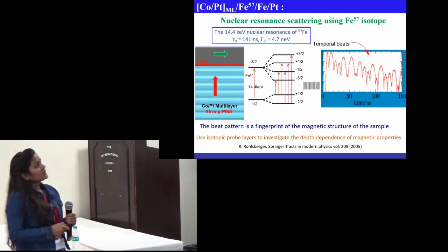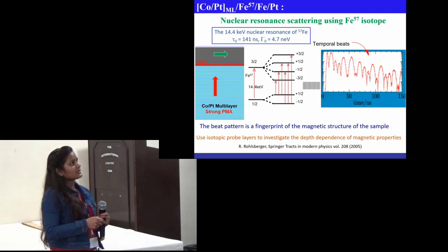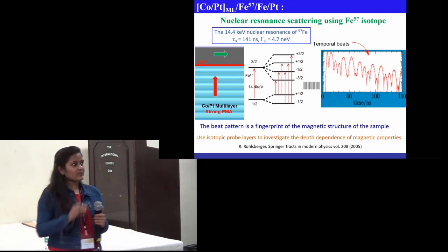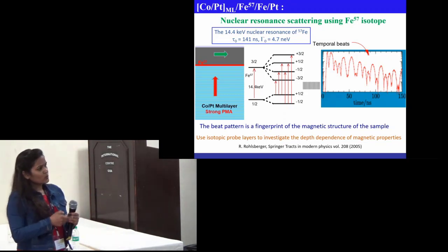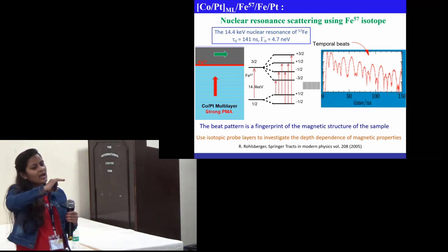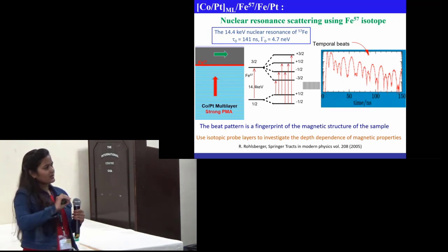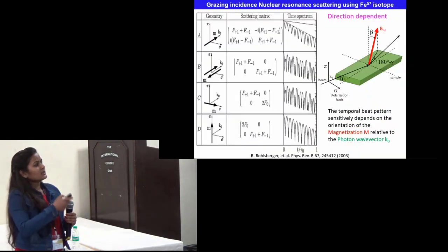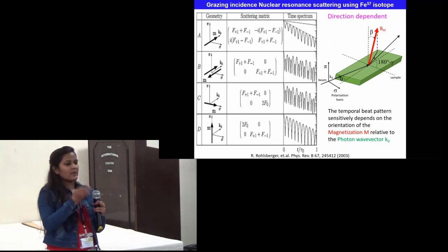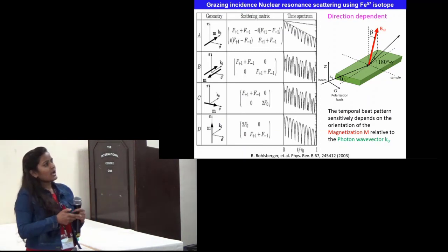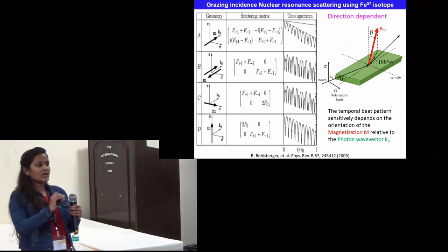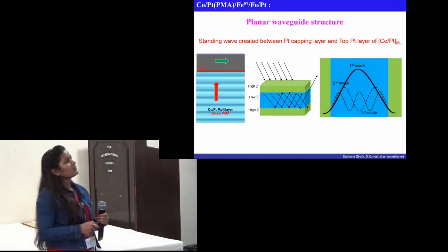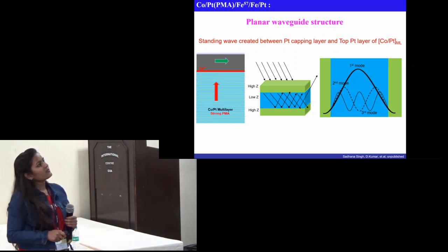To probe further, we prepared this multilayer structure with Fe-57 at the interface and performed nuclear resonance scattering. This technique is very sensitive to the isotope layer even at very small thickness, so it can be used as a depth-dependent technique: by using a small marker layer and changing its position, we can determine the magnetic orientation at that position. This technique is also direction-dependent with respect to the polarization vector, and hence it can give exact information about the orientation of spins at the interface.